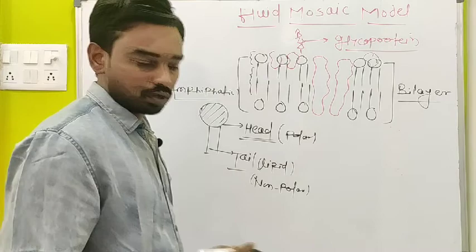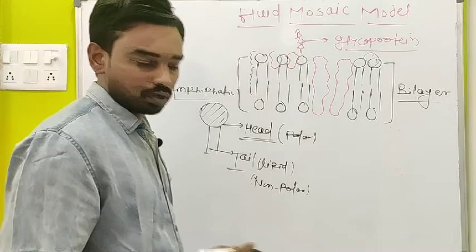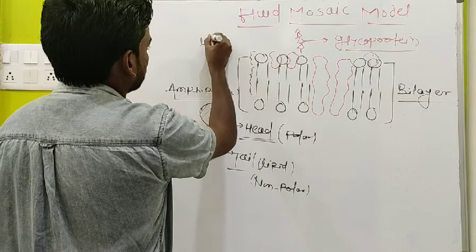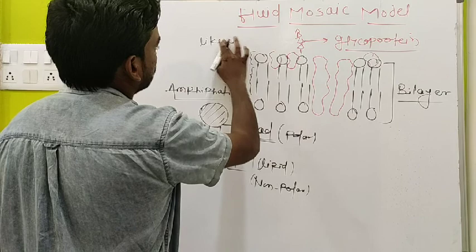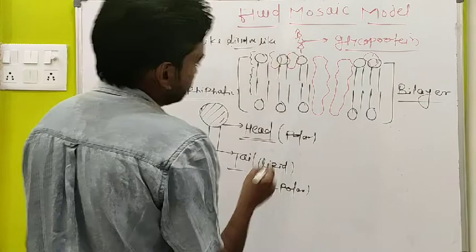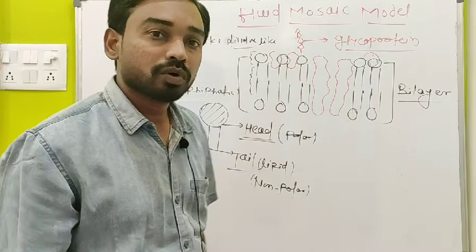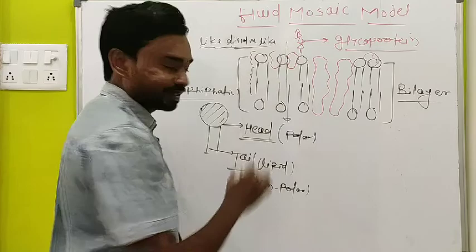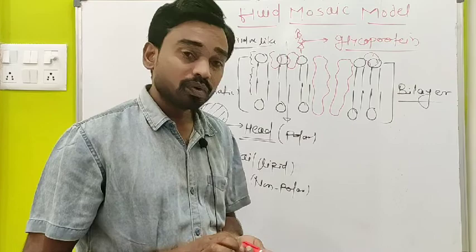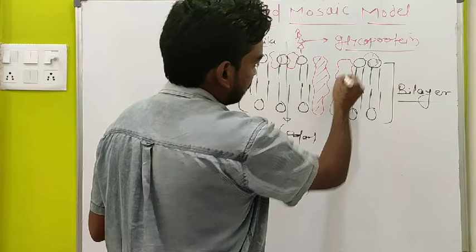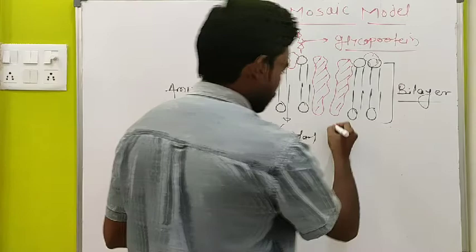By the law of solubility — like dissolves like — non-polar gases like carbon dioxide and carbon monoxide, and non-polar substances like oil, can easily pass through the membrane because most of its nature is non-polar. But for polar substances to pass through, special proteins are needed. These proteins are completely merged inside the plasma membrane and are called integral proteins.